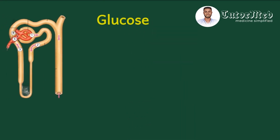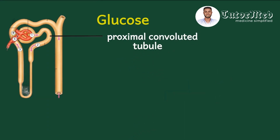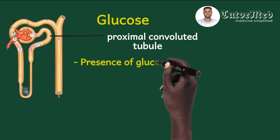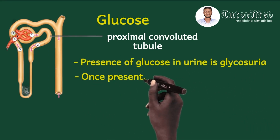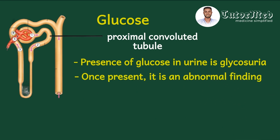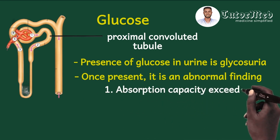Now let's look at the various parameters measured in urine, beginning with glucose. When the glomerulus filters plasma, the filtrate reaches the proximal convoluted tubule where all glucose is absorbed. If not fully absorbed, glucose ends up in the urine — a condition called glycosuria. Glycosuria is an abnormal finding. The first cause is that the absorption capacity of the proximal convoluted tubule is exceeded, which typically occurs in diabetics when plasma glucose is more than 10 mmol/L.